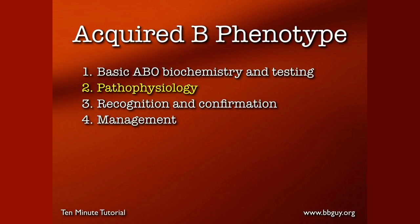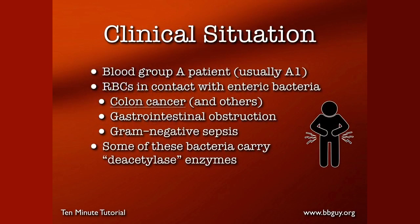Moving on to acquired B itself — how does this happen? It happens almost always in a clinical situation of a blood group A patient, especially blood group A1, where their red cells are coming in contact with enteric bacteria, bacteria from the gastrointestinal system, especially colorectal cancer. That's the classic presentation of someone with acquired B. However, other forms of enteric cancer such as stomach cancer can do the same thing. GI obstruction, gram-negative sepsis — all these things have in common the fact that these red cells are in contact with bacteria, some of which carry deacetylase enzymes.